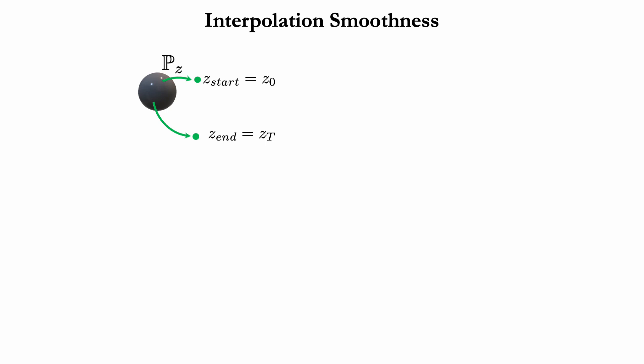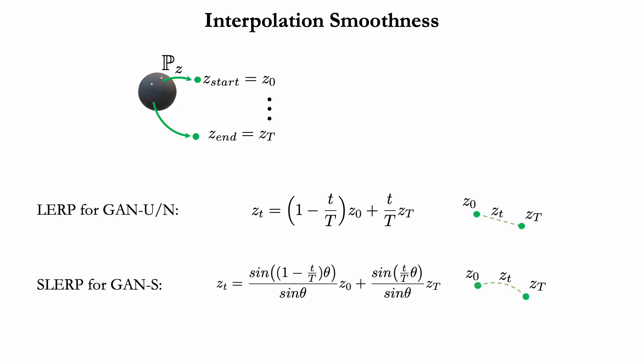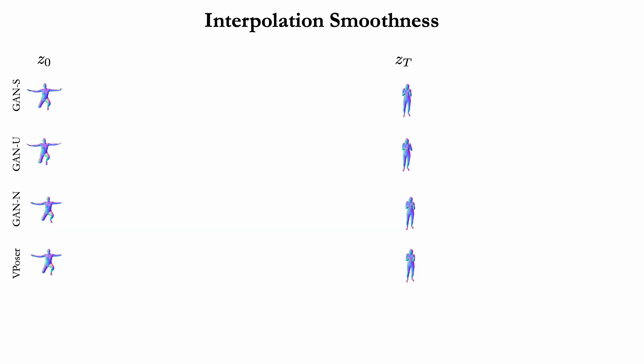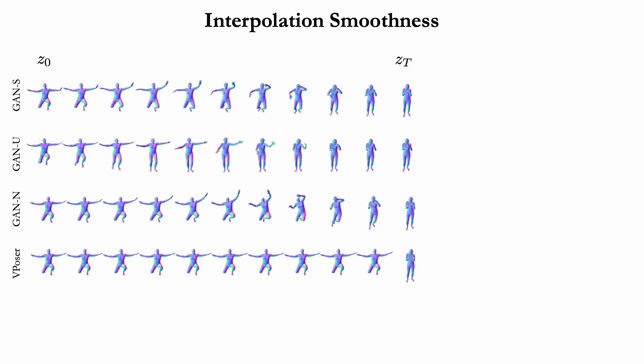We also tested the ability of the three variants of our model to interpolate between poses. In each case, we sample pairs of points from each prior distribution. Then we follow a geodesic between the points in each sampling space and render the intermediate poses. For pairs of real meshes, we recover the corresponding latent vectors for each model and interpolate.